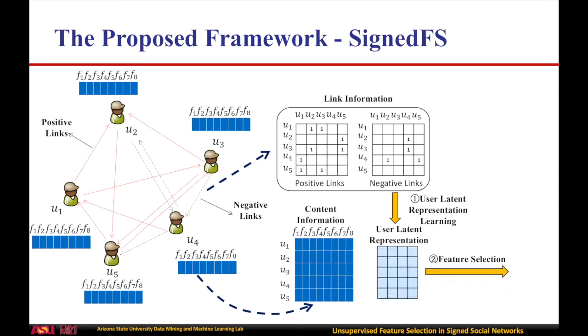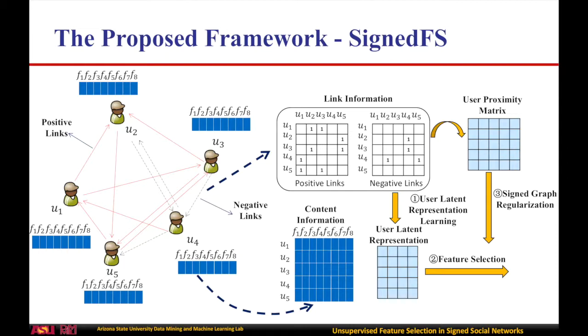Therefore, in the second phase, we take it as a constraint to guide feature selection in the content space. In the third phase, we revisit the principle of homophily and balance theory in signed social networks and model the user proximity by a signed graph regularization.